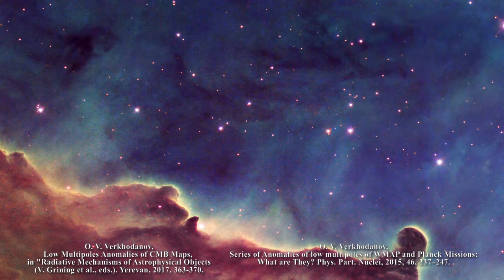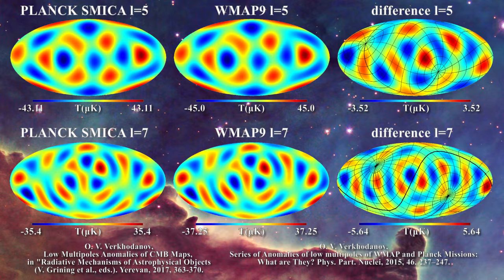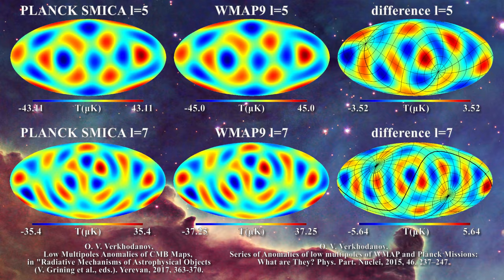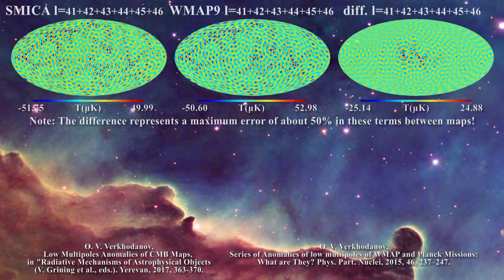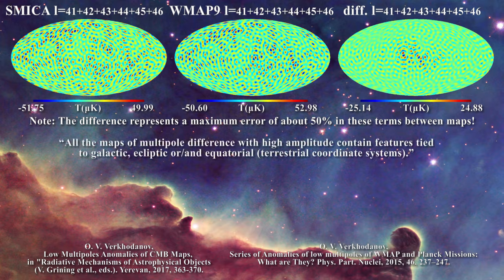Here are examples of what he observed, first for multiples L equal 5 and L equal 7. He noticed that the L equal 5 difference map is sensitive to the equatorial coordinate system which is overlaid on the map. Notice how the equatorial poles are placed. For the difference map at L equal 7, the ecliptic coordinate grid is overlaid and the saddle points are at the ecliptic poles. He then examined the sum of L equal 41 to 46 multiples and the differences for WMAP and Planck, noting substantial residual power in the differences. He stated that all maps of multipole differences with high amplitude contain features tied to galactic, ecliptic, and/or equatorial terrestrial coordinate systems.